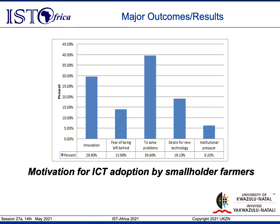In terms of motivation for ICT adoption by smallholder farmers, the farmers identified the need to solve problems as the main reason why they adopted ICTs. This was followed by the need for innovation and then by the desire for new technologies. The fourth reason was due to the fear of being left behind, and lastly, the least cited reason was institutional pressure. So the majority of farmers actually adopted ICTs because they wanted to solve problems.